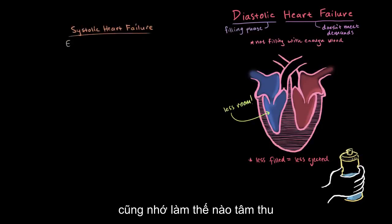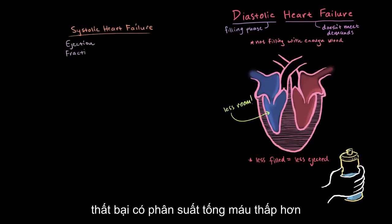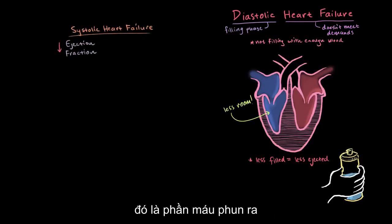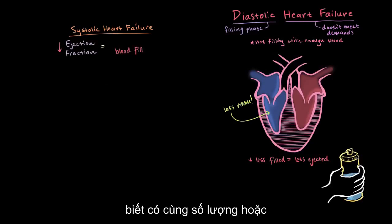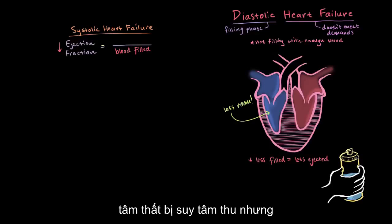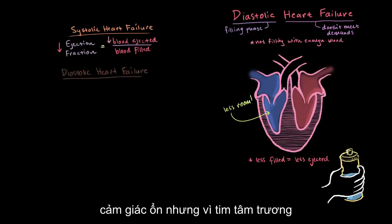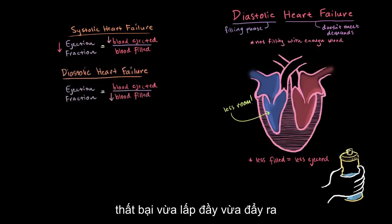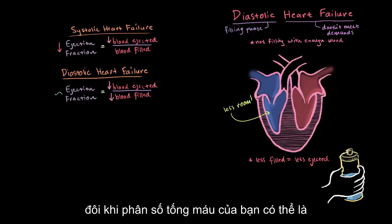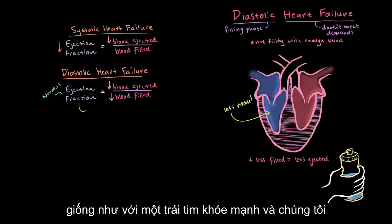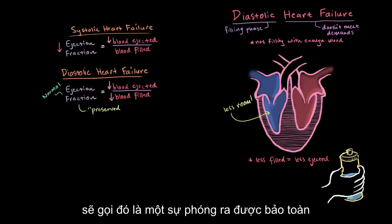Remember how systolic heart failure had a lower ejection fraction — that fraction of blood ejected with each beat. With systolic failure, there's about the same amount or possibly even more blood filled into the ventricles, but less ejected, so naturally you'd have a lower ejection fraction. But since diastolic heart failure has both filled and ejected lower, sometimes your ejection fraction can be the same as with a healthy heart. We would call that a preserved ejection fraction.